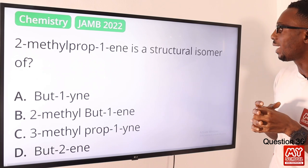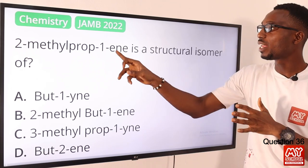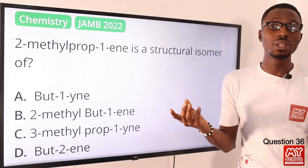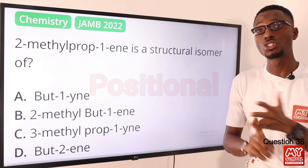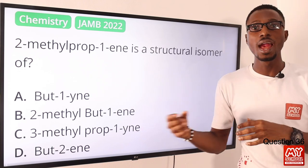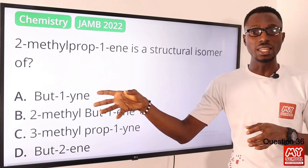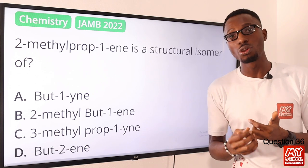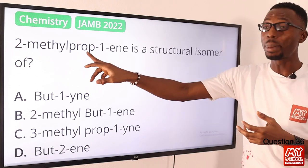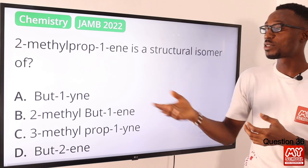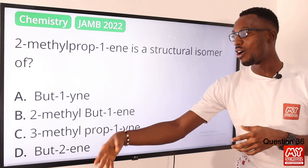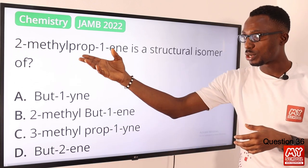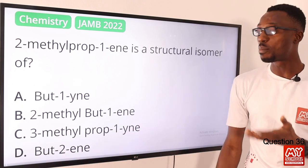Question 36. 2-methylpropene is a structural isomer of what? We are talking about alkenes — alkenes that have four or more carbon atoms can exhibit different types of isomerism: structural, positional, and geometric isomerism. Here we are talking about structural isomerism, and this is definitely for butene. The structural isomers are but-1-ene, but-2-ene, and 2-methylpropene which we have right here. So the correct option is option D for but-2-ene. We have three structural isomers, one of which is represented here.